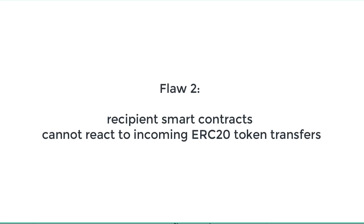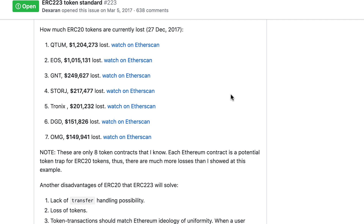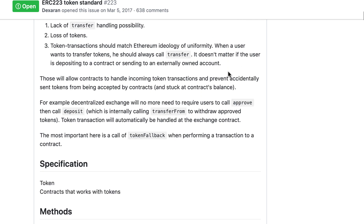Another problem of ERC20 is that recipient smart contracts have no way to react to incoming transfers. It would be really nice if when an ERC20 token is sent to a smart contract, this smart contract could have one of its functions executed. So let's see how ERC223 solves this problem.